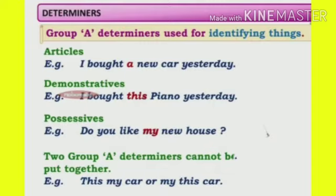Let's see articles first — A and THE. A and AN are indefinite articles, meaning they refer to a noun more generally. And THE is the definite article, because it clearly states the specific noun. For example: 'I bought a new car yesterday.' Here, A is a determiner that precedes the noun 'car', showing just one car, and that it is a new one.